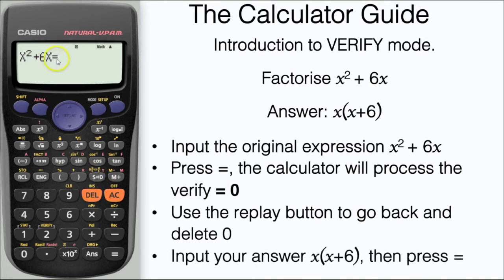But I can use the replay button to go back and delete the zero and therefore I've got an equal sign there ready for me to put in my answer which is x and then in brackets x plus 6 to check that this is correct.